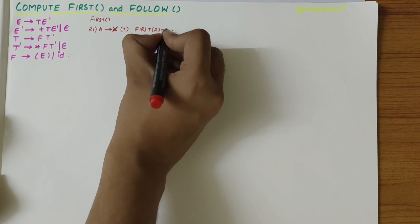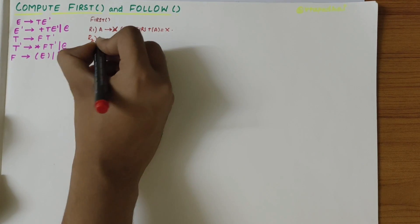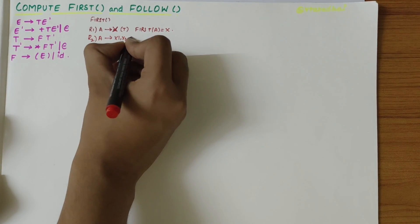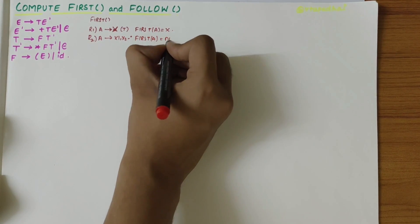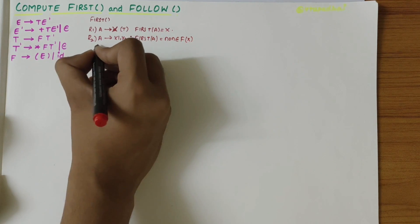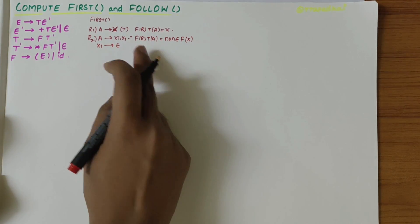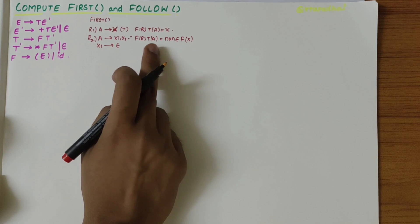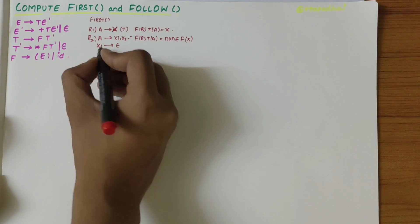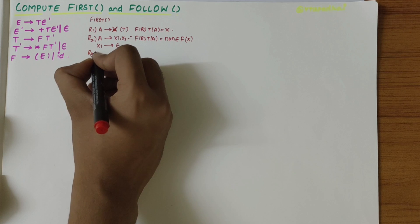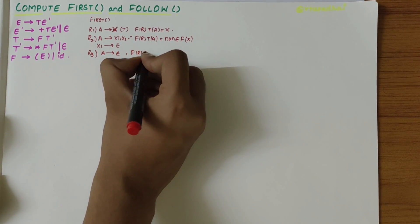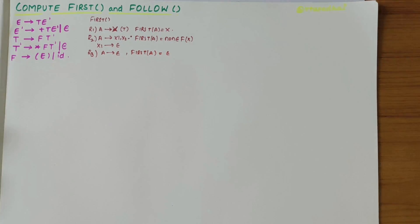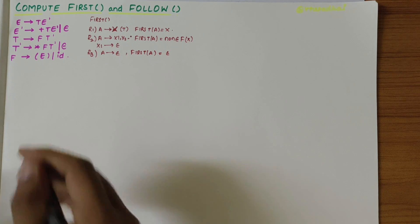Rule two states that if A derives X1 X2, then first of A is equal to non-epsilon first of X1, and if X1 derives epsilon, then first of A includes non-epsilon first of X1 and so on. Rule three states that if A derives epsilon, then first of A is equal to epsilon. So FIRST is pretty easy to compute.